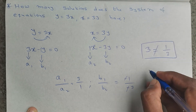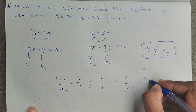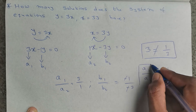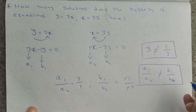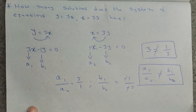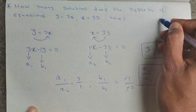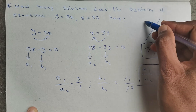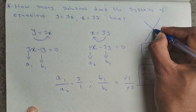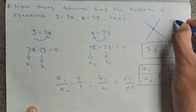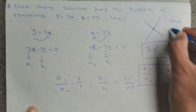So we can conclude a1 by a2 is not equal to b1 by b2, that is 3 is not equal to 1 by 3. When a1/a2 is not equal to b1/b2, the graphs of the two equations intersect at one point, meaning the system has exactly one solution.